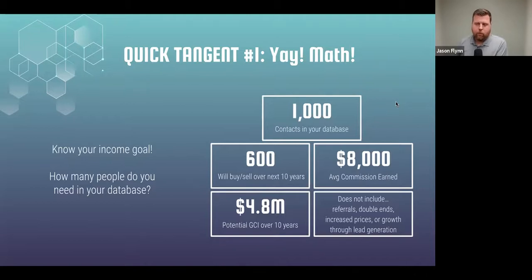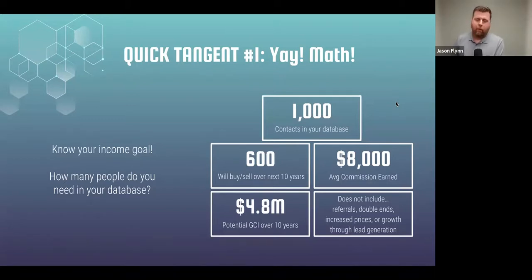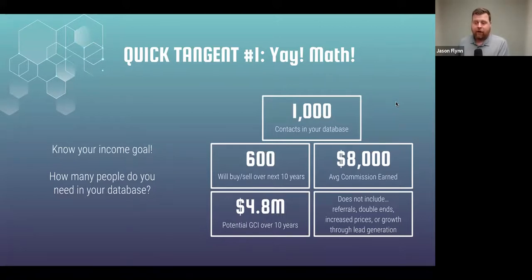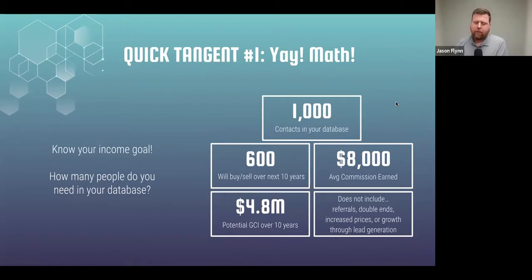You can only answer that question if you know your income goal and how many people you need in your database. A great resource for this is the Millionaire Real Estate Agent — look at the economic and budget model. That's where you'll figure out how many people you truly need in your met category, set a goal, and figure out how to get from where you are to that number. We're not really talking about adding people today — we're going to talk about how to communicate with the ones you have.